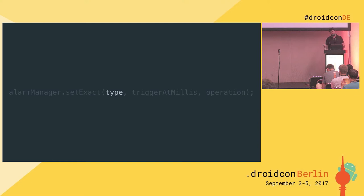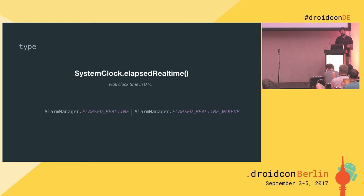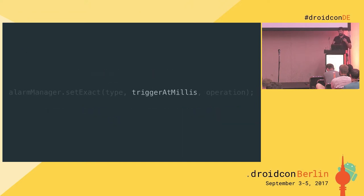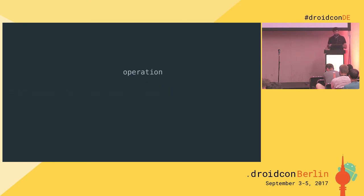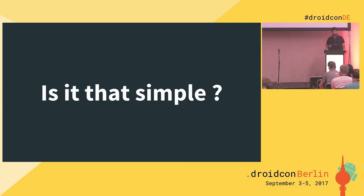There are two main categories of alarm types. The first is linked to system current time — time since boot including sleep. The second is SystemClock.elapsedRealtime, which is wall clock time in UTC. The trigger time in milliseconds must match the type you choose. The operation is a PendingIntent with getActivity, getService, or getBroadcast. I want to focus on PendingIntent because I see a lot of errors around it. First, is it that simple? Let's play a game. Two PendingIntents pointing to the same activity with the same ID and same flag — are they equal? Yes, they are. Change the ID to different values — not equal. Two different instances pointing to the same activity — equal. If you add extras, extra1 and extra2 — that's the trick: they are still equal, because extras are not part of Intent equality.